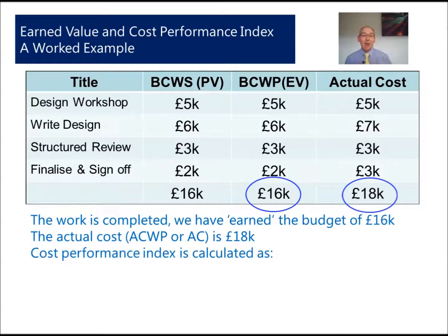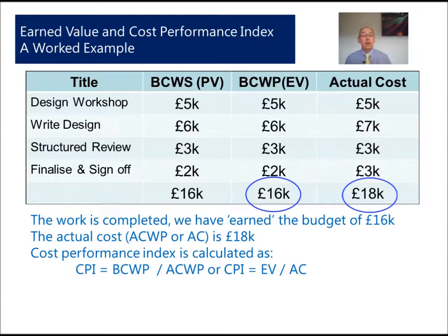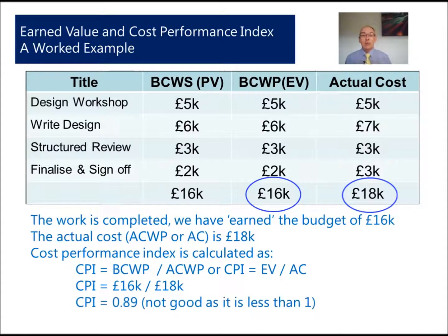The cost performance index is important because we use this algorithm to calculate the CPI metric. CPI equals BCWP divided by ACWP, or CPI equals EV divided by AC. So sixteen thousand pounds divided by eighteen thousand pounds gives us a CPI of 0.89. The target is to have a CPI of 1, and this is less than 1.